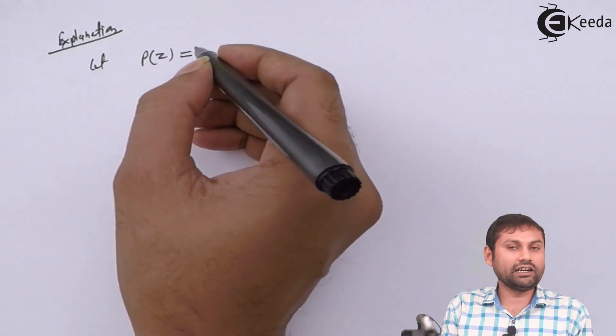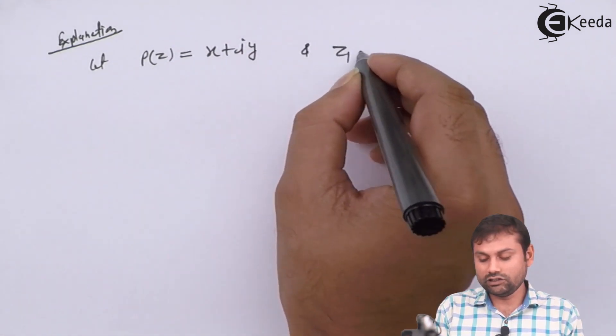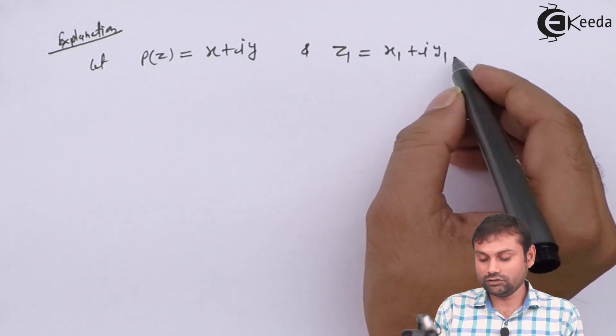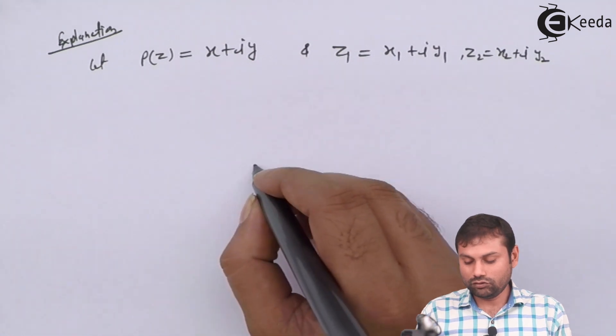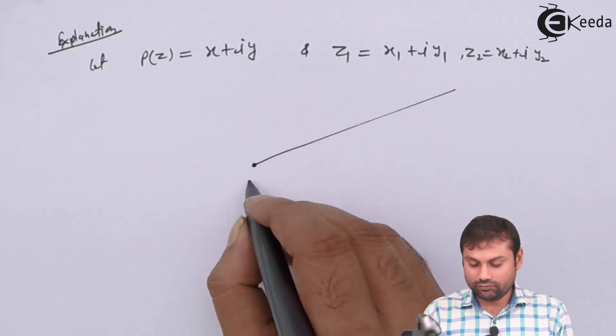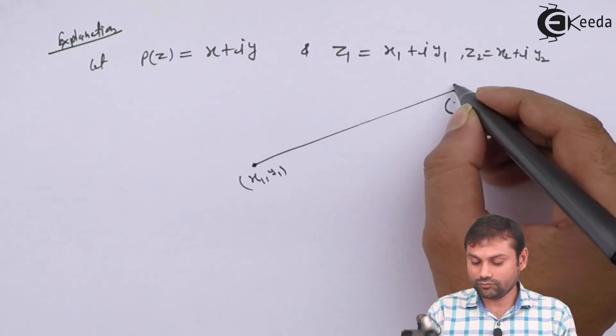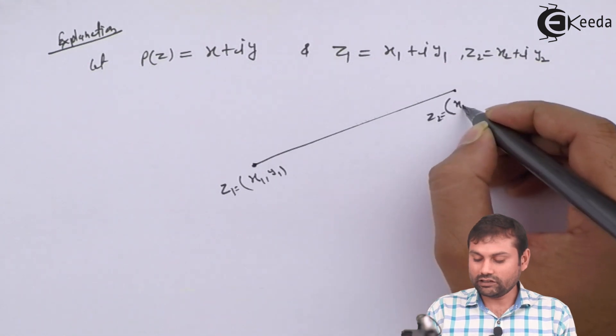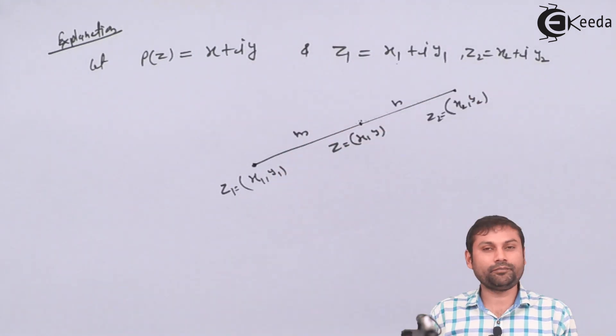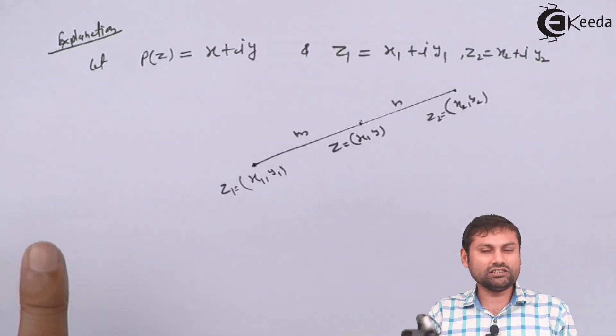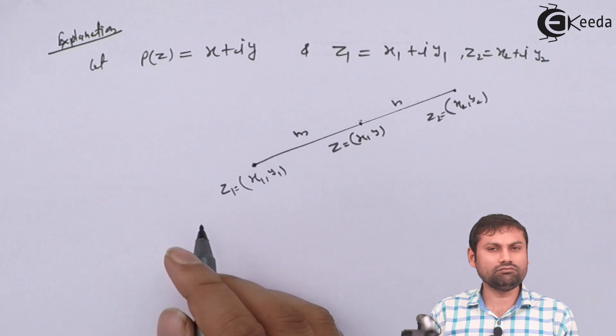Let P(z) write in form X plus iY, okay, and z1 is X1 plus iY1, and z2 is X2 plus iY2, okay. So here is z1, so we can write this is X1, Y1. This is z2, this can be like X2, Y2, okay. And this is z, that is X, Y, and M is to N, okay. So now this question comes in real number, real coordinate geometry. So in real coordinate geometry, directly you can apply the formula, okay.